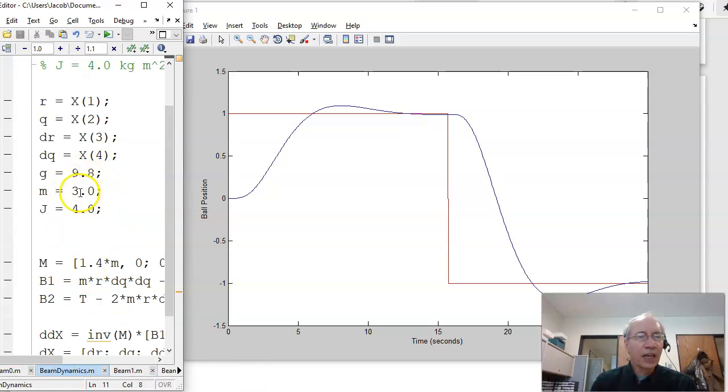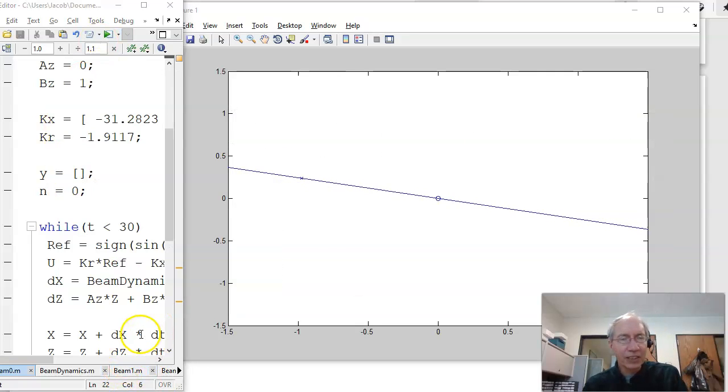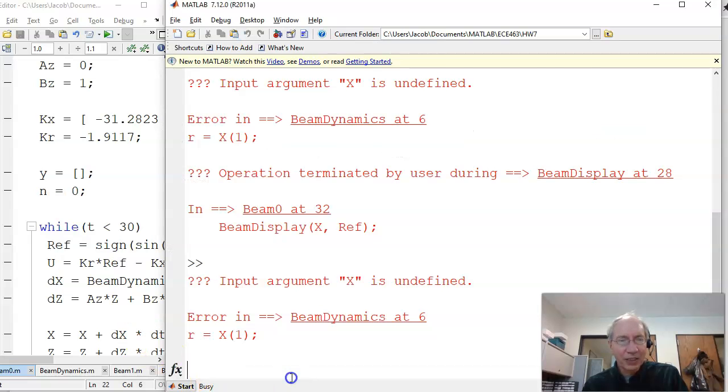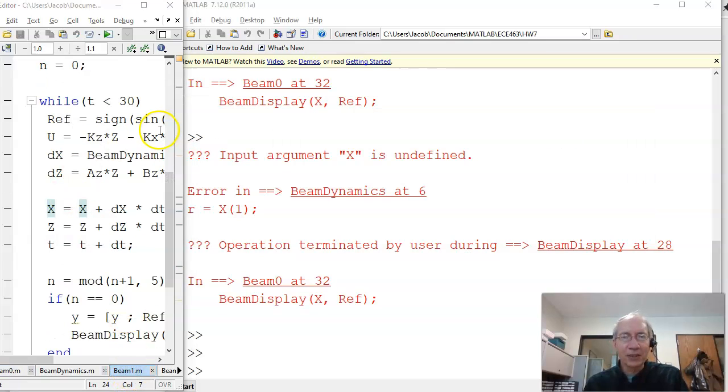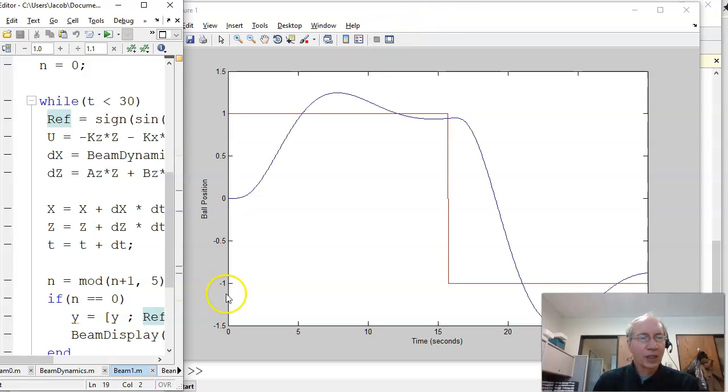Again, not a whole lot different than what we did with just full state feedback. The difference is, suppose I have extra mass. This went unstable just using pole placement. With the servo compensator, I've got that integrator. It's constantly figuring out what constant do I need to compensate. Run the servo compensator system, and the integrator is searching. It's trying to figure out what constant do I need to track the setpoint. It eventually figures it out, and I track my constant setpoint at plus 1. Tell it to go to minus 1. It figures it out, and I go to minus 1.